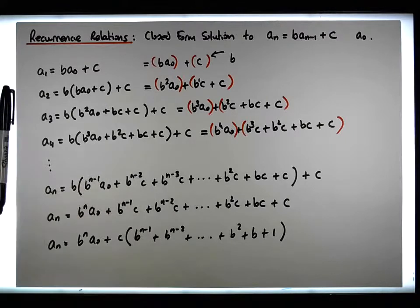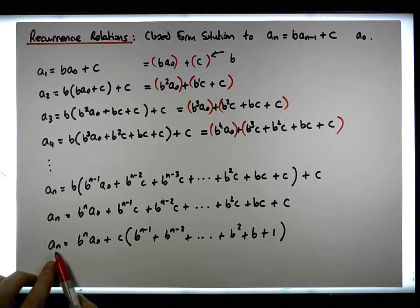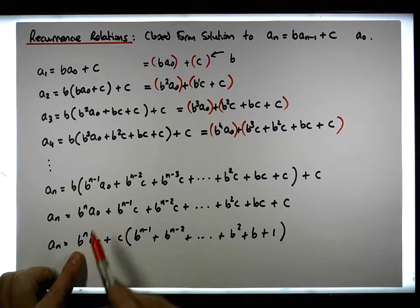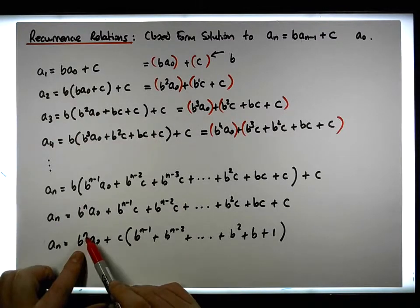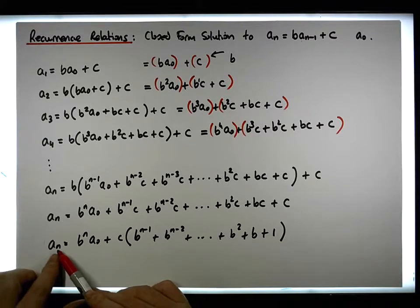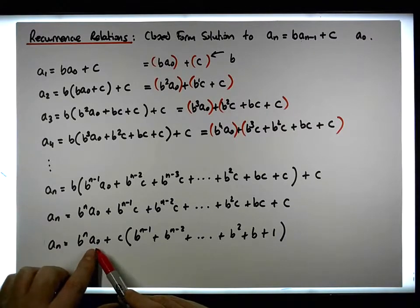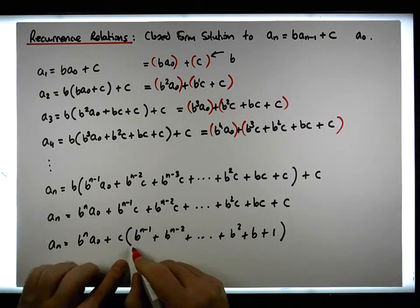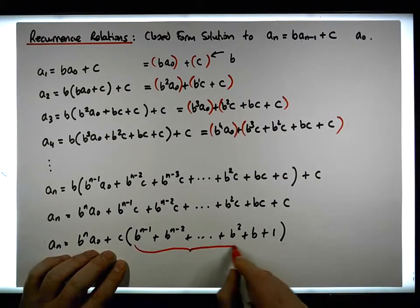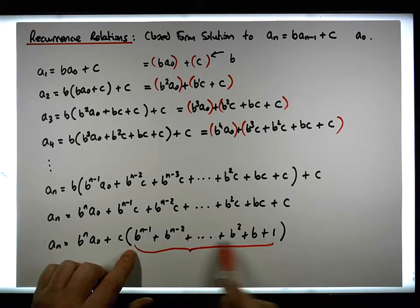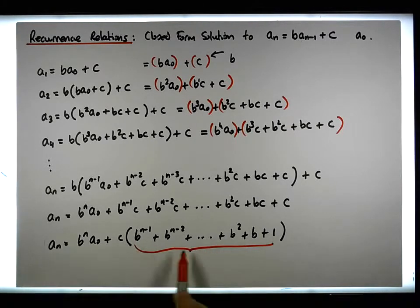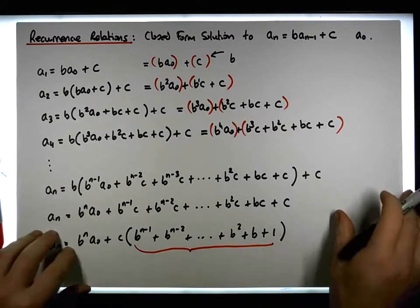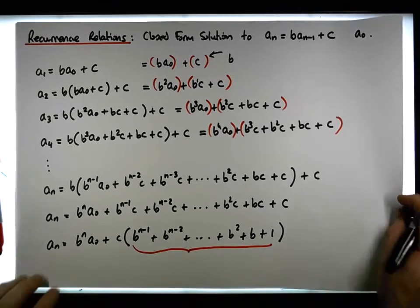Now the question we have is: we're nearly there. We have the nth term clearly in terms of b to the n times a0, which we'll know when figuring out the nth term, and we know the base case. We'll also know the constant c from the recurrence. The question now is what is going on with this power series — is there a way to sum it up? And there is: we have a closed form solution, so let's explore it.